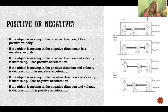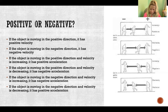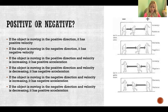If we change and go in the negative direction, that flip-flops. So if we're going in the negative direction and velocity is increasing, there is negative acceleration. And if we're going in the negative direction and velocity is decreasing, that is positive acceleration. So if we're going in the positive direction and we start going faster, that's negative acceleration, and if we start going slower, then it's positive acceleration.